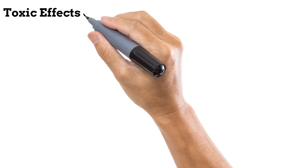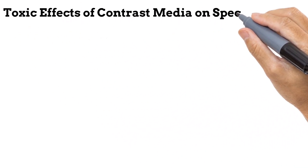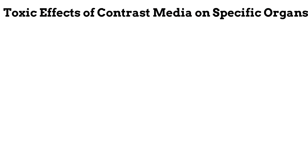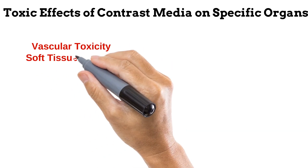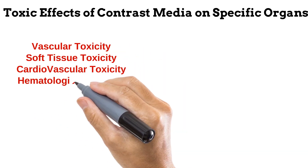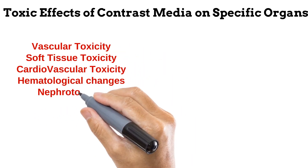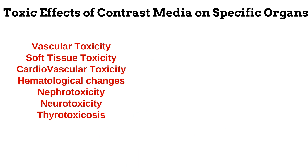What we consider a contrast media reaction actually happens because the contrast media had some negative effect on one or more organs. Let us look at seven common organ systems where contrast media exhibits its toxic effects. We'll be looking at vascular toxicity, soft tissue toxicity, cardiovascular toxicity, hematological changes, nephrotoxicity, neurotoxicity, and thyrotoxicosis.